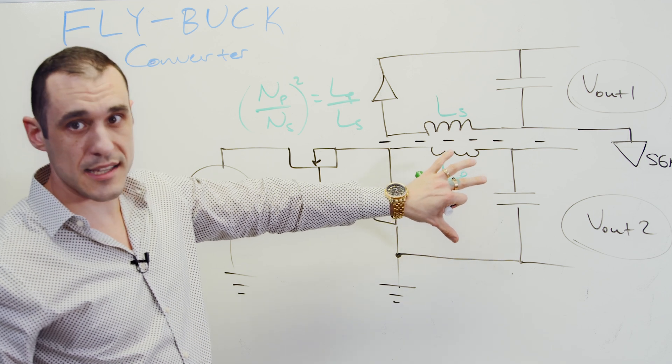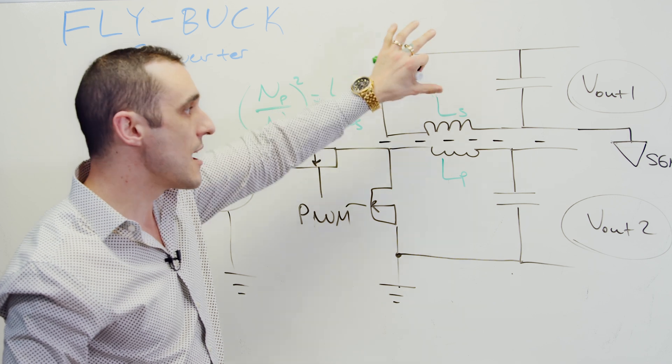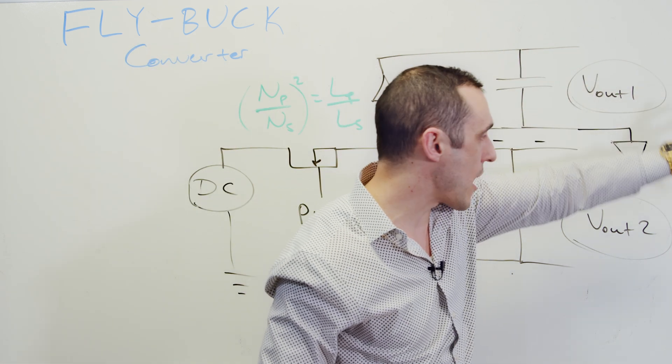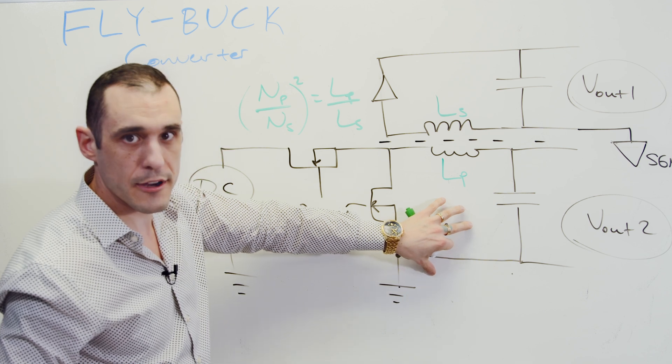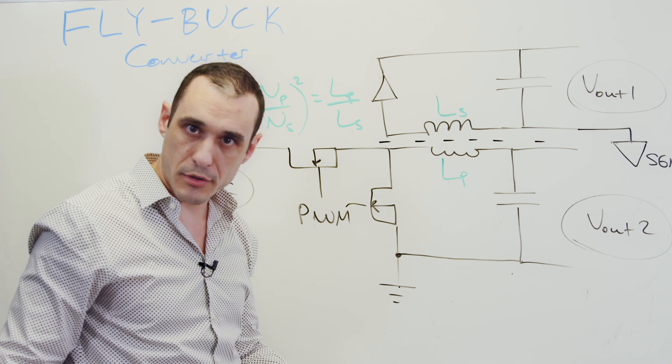And when I say totally isolated, I mean whatever you're powering on the secondary side can't have any traces that travel back over to this primary side unless you use another coupling transformer or unless you use an optocoupler.